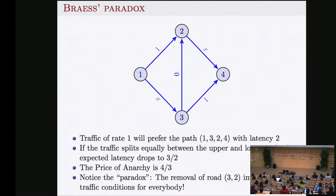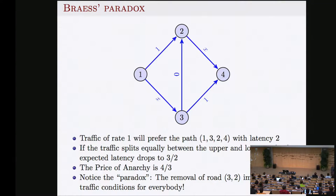Traffic of rate one goes from one to four. Selfishness is not always negative — it's what we do, we optimize for ourselves. If you are a driver, you choose the best road. If you follow the middle path through the zero-latency corridor, with rate X equal to one, the latency is one plus zero plus one — equals two.